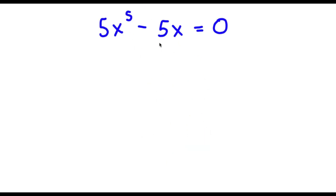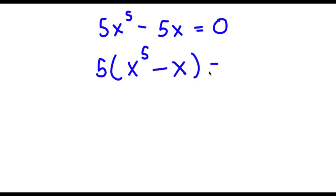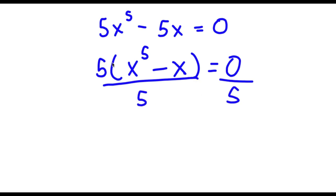Alright, so I have 5x to the power of 5 minus 5x is equal to 0. The first thing I'm going to do is factor out 5. If I factor out 5, I get 5 times x to the power of 5 minus x, because 5x⁵ divided by 5 is x⁵ and negative 5x divided by 5 is negative x. Now I'm going to divide both sides by 5, so these 5s cancel out and I'm left with x to the power of 5 minus x is equal to 0.